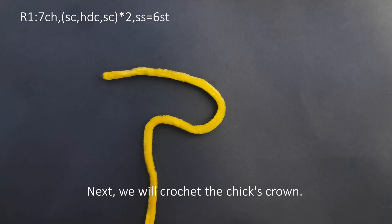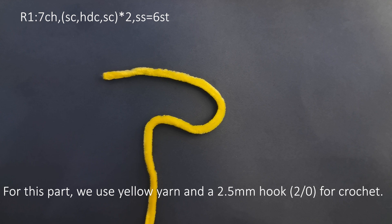Next, we will crochet the chick's crown. For this part, we use yellow yarn and a 2.5mm hook (2/0) for crochet.